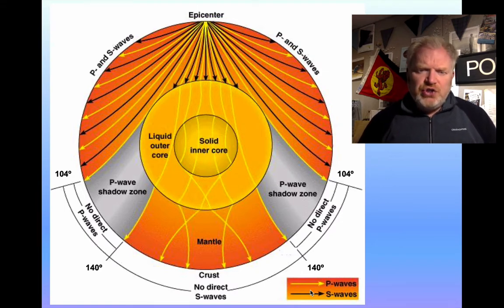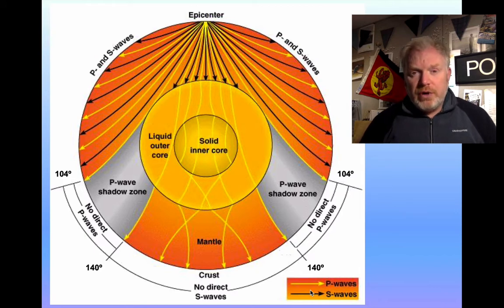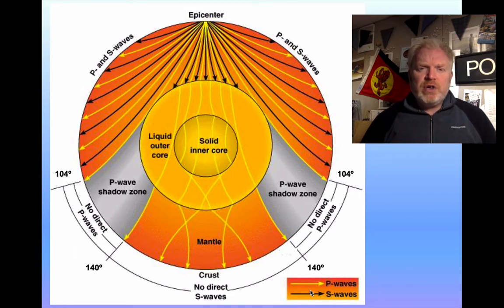That will have an effect on slowing the waves down. So the location of these shadow zones is what told Gutenberg, for example, that there must be this boundary between the mantle and the core, where the properties of that materials in those layers change suddenly and significantly. We get evidence for the solid inner core because the earthquake waves that pass through that actually speed up a little bit in the inner core.